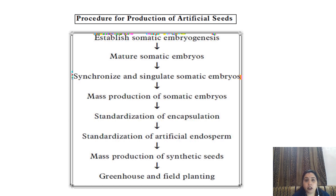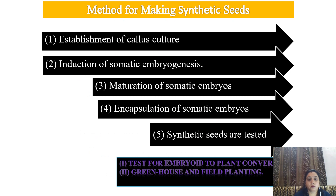Procedure for production of artificial seeds: First, somatic embryogenesis is established. Mature somatic embryos are taken out. Mass production is done. Standardization of encapsulation is carried out. Artificial endosperms are formed. Mass production of synthetic seeds follows. Then they are tested in greenhouse and then planted in fields. Method of making synthetic seeds: first we establish callus culture, then induce somatic embryogenesis, that means the formation of somatic embryos. Maturation of somatic embryos takes place. Then we encapsulate those somatic embryos. Synthetic seeds are formed, tested, and the test for embryo to plant conversion is done. Then greenhouse and field planting is done.